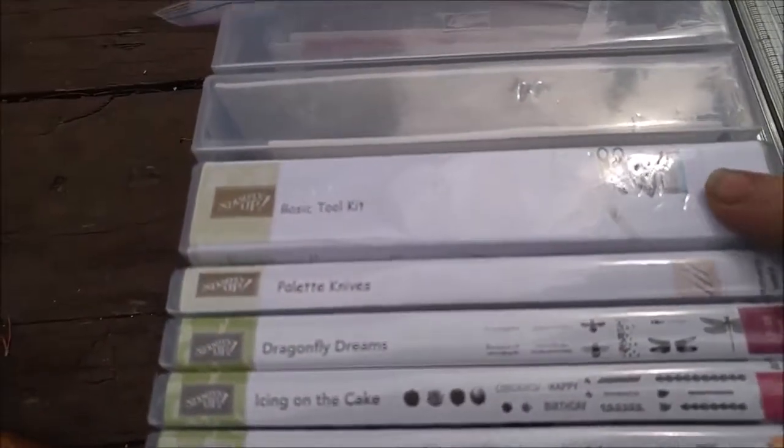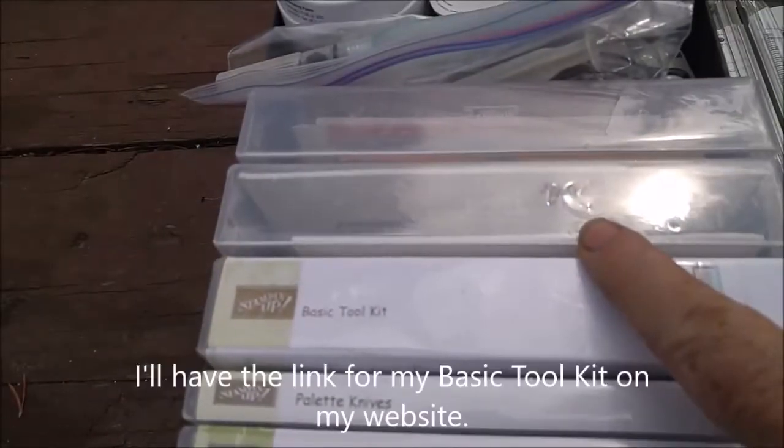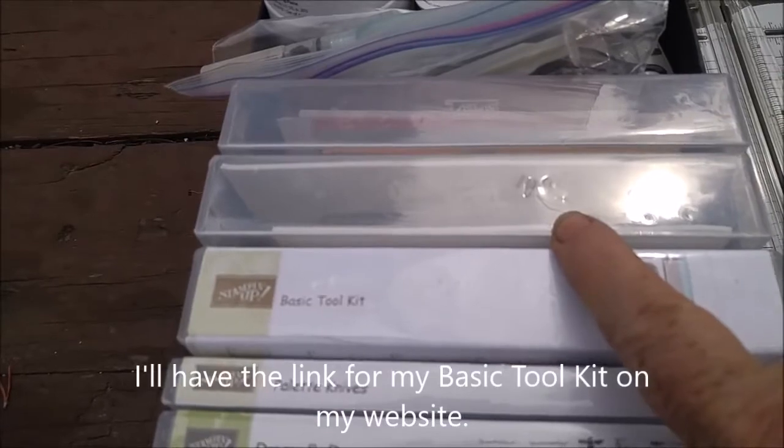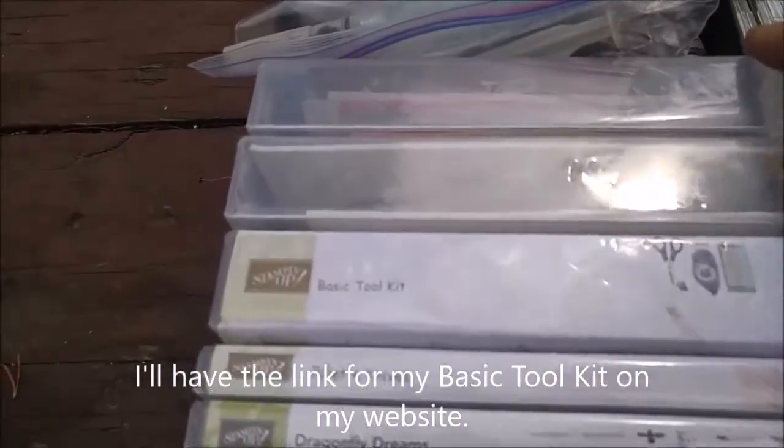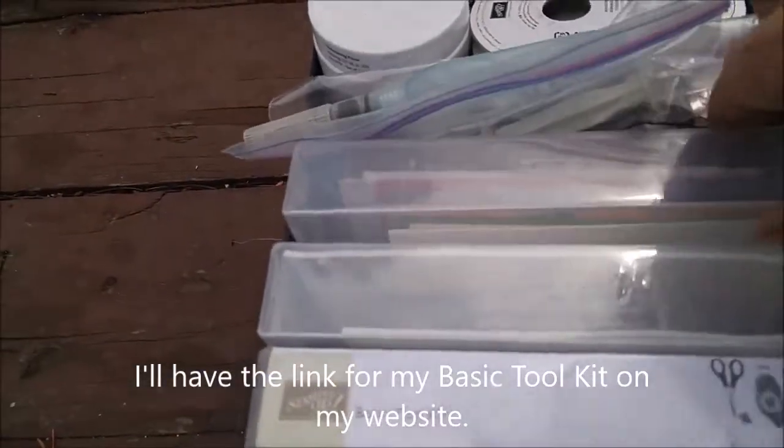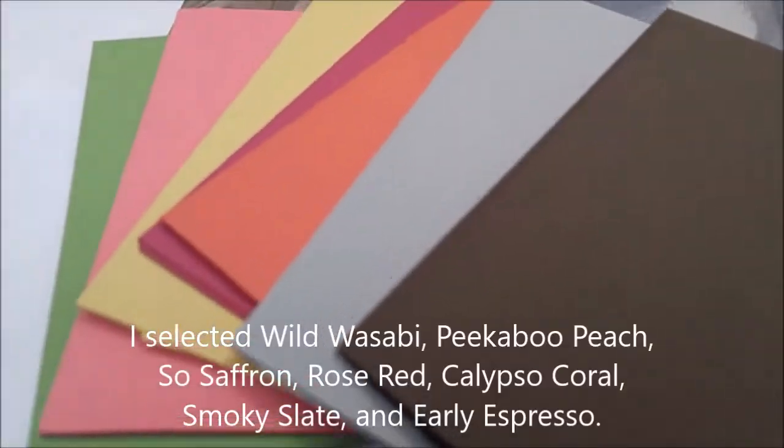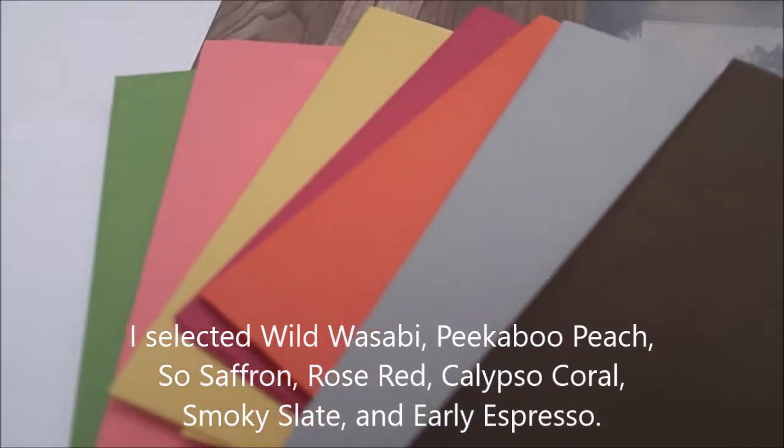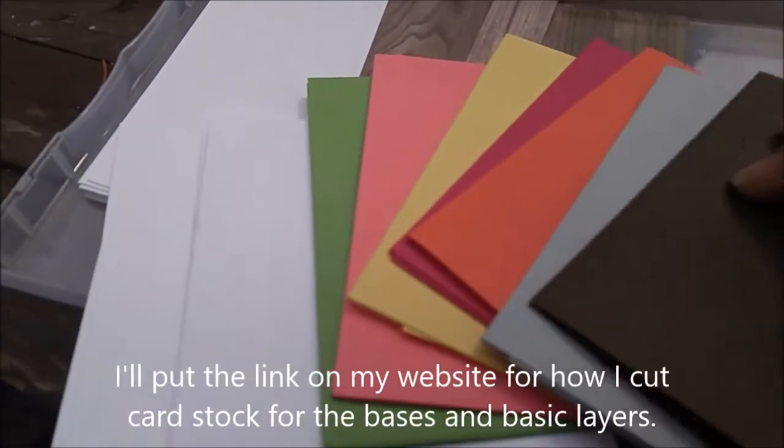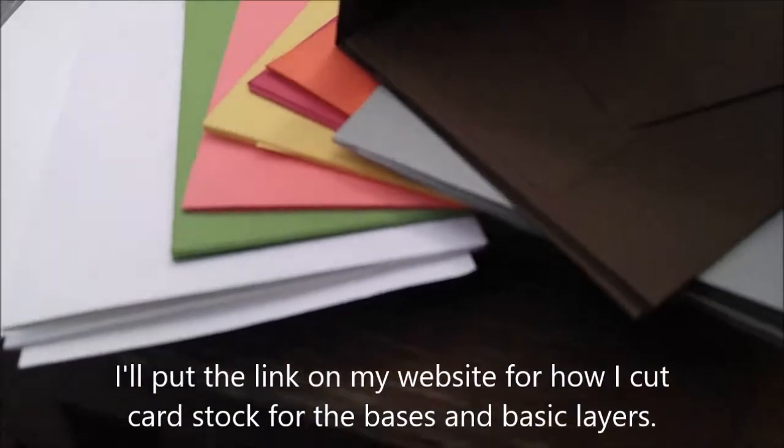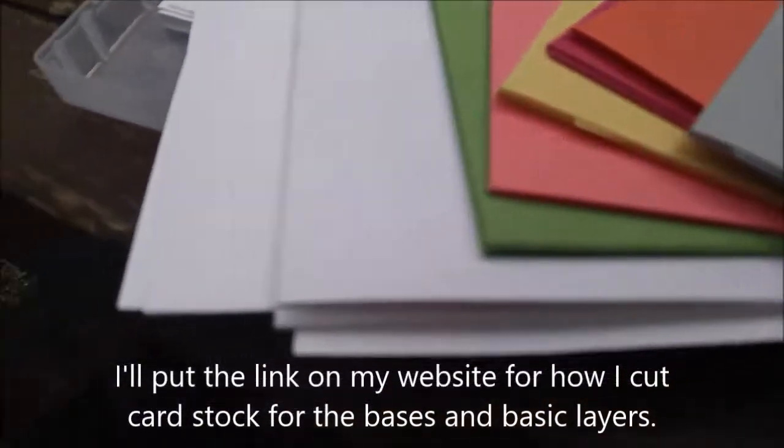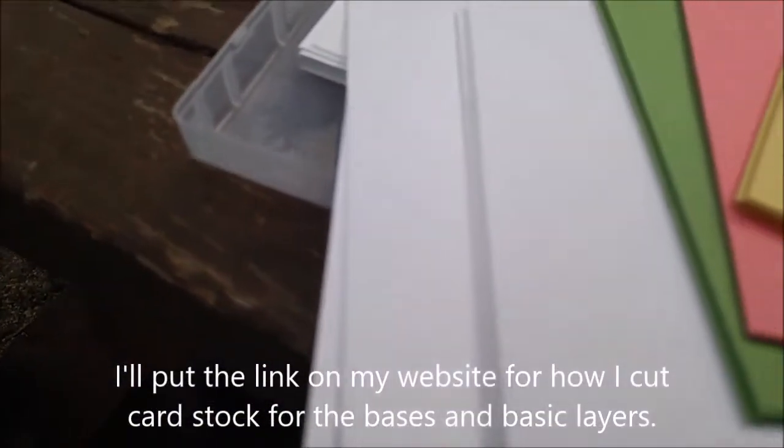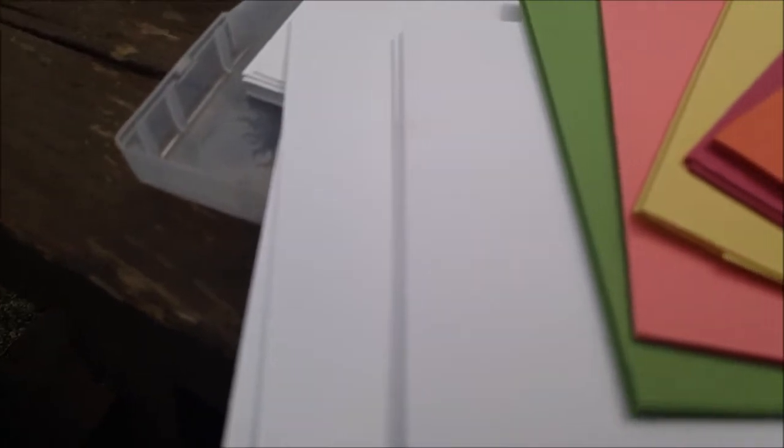This is my basic tool kit. This holds some blocks as well as some fun foam that I can also use for a stamping pad. And this has quite a few pieces of cardstock. I picked seven colors of cardstock. Each of these has a card base or two, and then some basic layers inside. Plus I have whisper white. I have a little bit more whisper white than everything else.